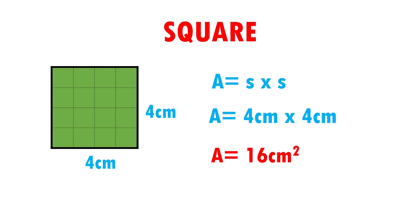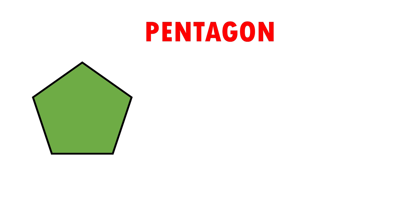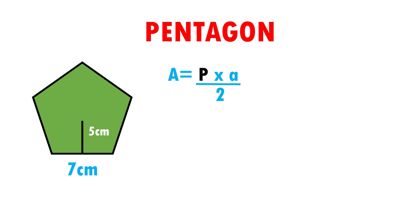This means that our square can fit 16 squares of 1 cm per side. Very easy, right? Let's see another example. Here I have a pentagon that measures 7 cm per side and also has an apothem of 5 cm.